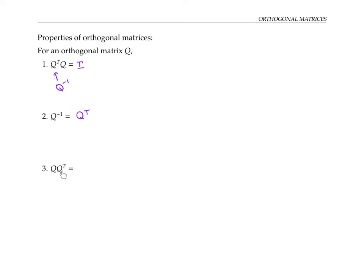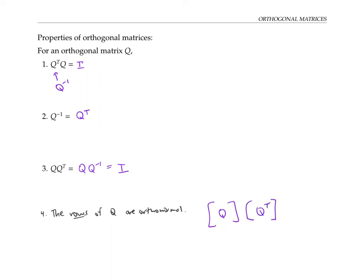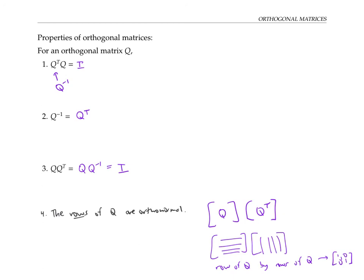Finally, if we take Q times Q transpose — the opposite order — that's the same as Q times Q inverse, so we also get the identity matrix in this direction. This last property reminds us of one more nice property of orthogonal matrices: not only are the columns an orthonormal set, but the rows are also an orthonormal set. That's because Q times Q transpose multiplies rows of Q by columns of Q transpose, which are just the rows of Q — so we're dotting rows of Q with rows of Q. Since the result is the identity, each row dotted with itself gives one, and each row dotted with a different row gives zero — so the rows are orthonormal.